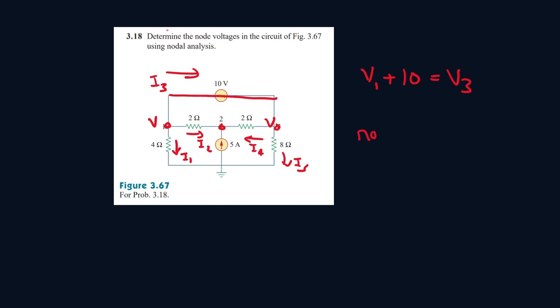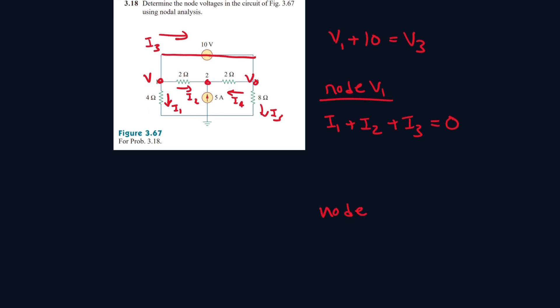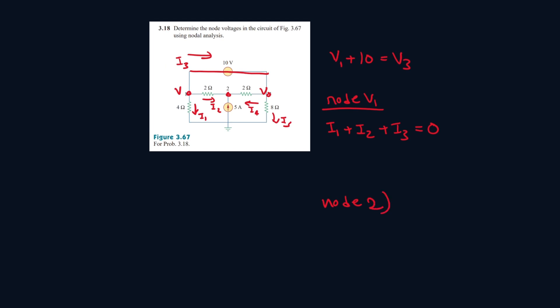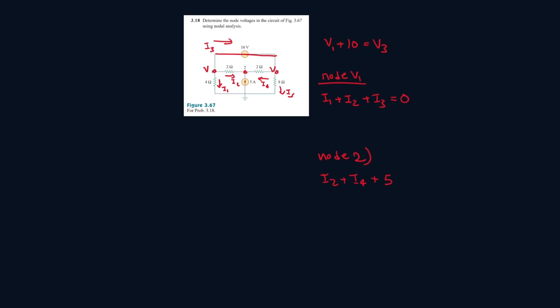For node V1, everything is leaving the node, so it will be I1 plus I2 plus I3 equals 0. For node 2, everything is also entering the node, so it will be I2 plus I4 plus 5. And then for node 3, I3 is entering the node, so this will be equal to I4 plus I5.